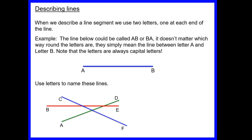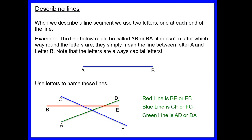Let's look at the solutions. The red line you could have called BE or EB. The blue line you could have called CF or FC. And the green line is either AD or DA. Make sure you're happy with how we name a line segment.